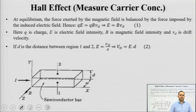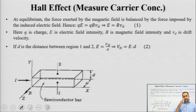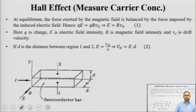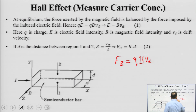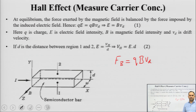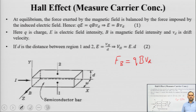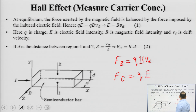Apart from type identification, you can use Hall effect for measuring carrier concentration. The charge carriers in this arrangement are experiencing two types of forces. One force is due to the magnetic field: the force exerted by the magnetic field on moving charge carriers is given by q times B times v_d, where q is charge, B is the intensity of magnetic field, and v_d is drift velocity.